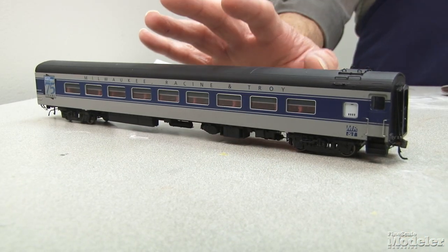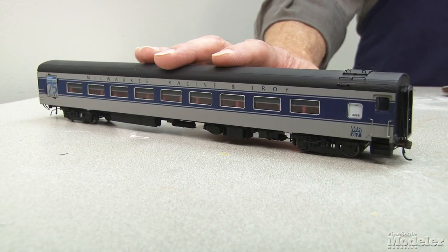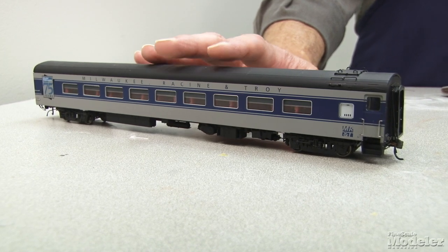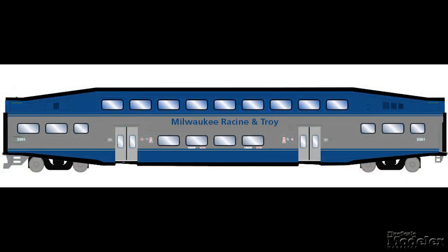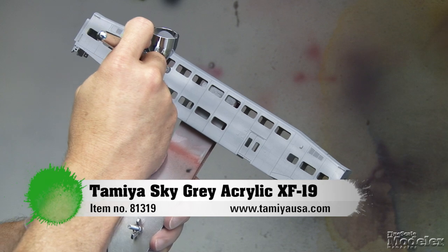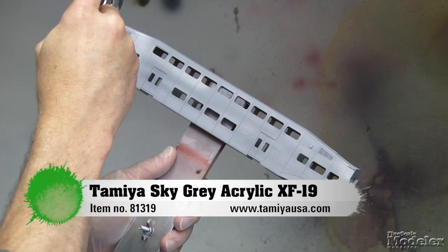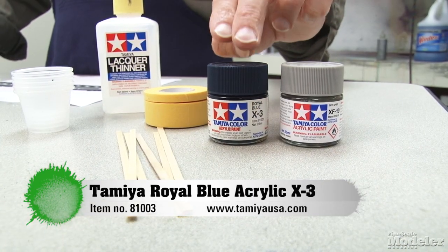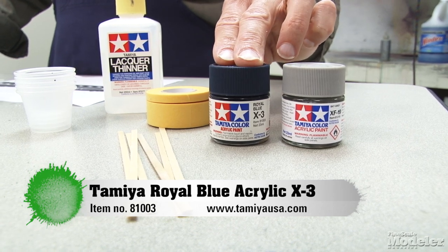We're going to paint it up for the MR&T, much like this train car, except Ben Lake came up with a new scheme which kind of flips that. Instead of a blue cheat line, we're going to put blue top and bottom and do a gray cheat line. So the body color, which we've already sprayed, is Tamiya Sky Grey. The blue is Royal Blue from Tamiya also, X3.